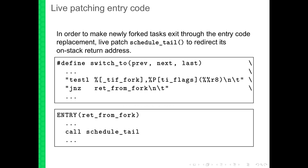The trick is to live-patch schedule_tail, which is one of the first things a new fork would call. This live-patched schedule_tail would just modify its own stack return address from the original entry code to redirect it to the new one.